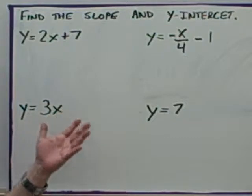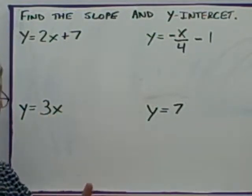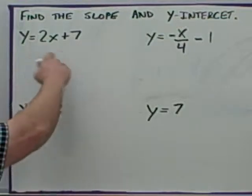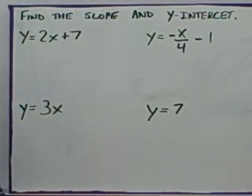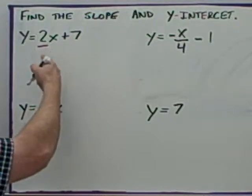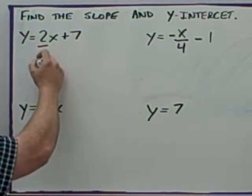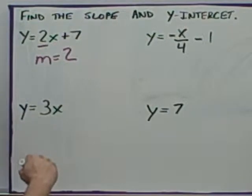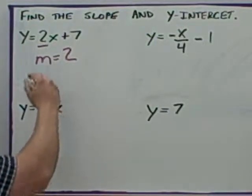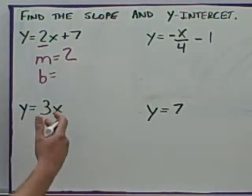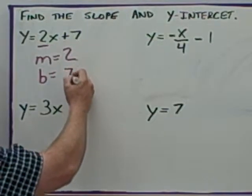You could also be given equations and asked to find the slope and y-intercept from them. Here we are given an equation and asked to find both values. The number multiplying the x is 2, so the slope is 2, and the y-intercept — which I'll write as b — is positive 7.